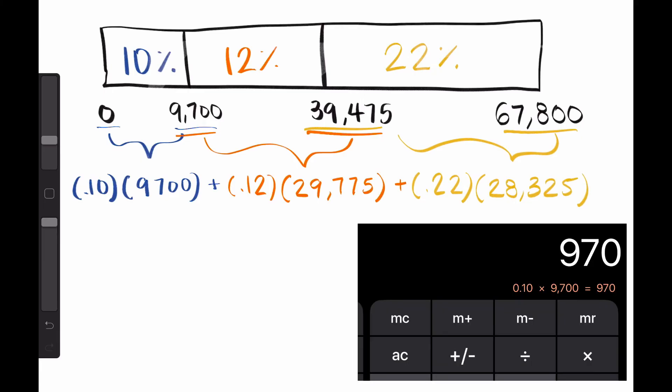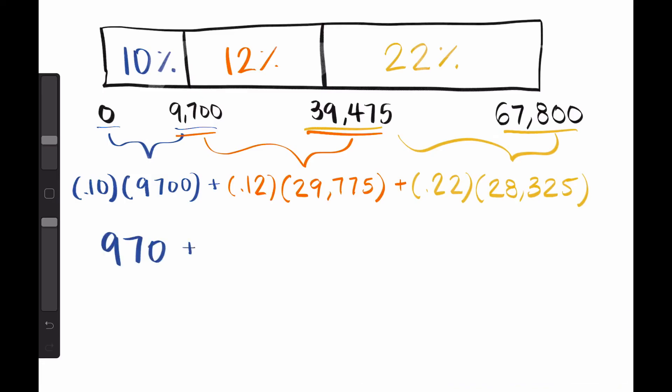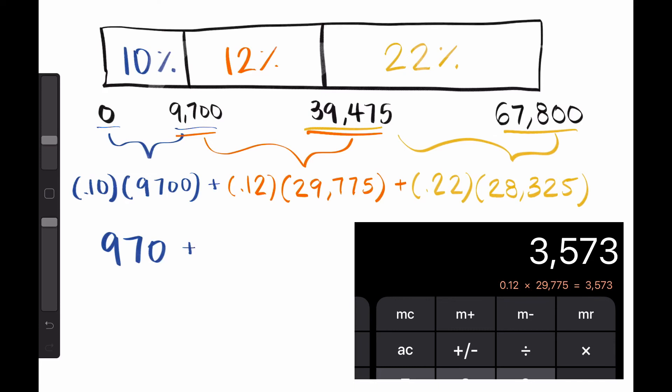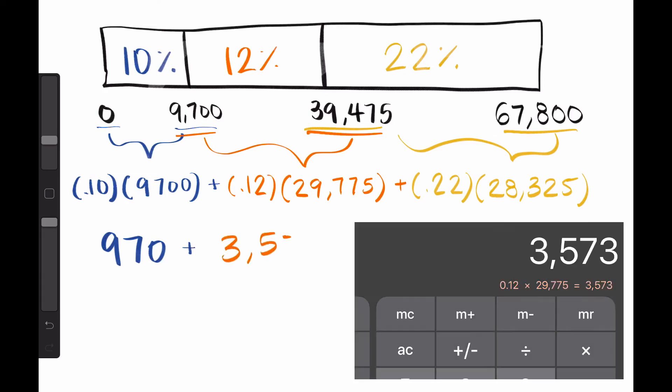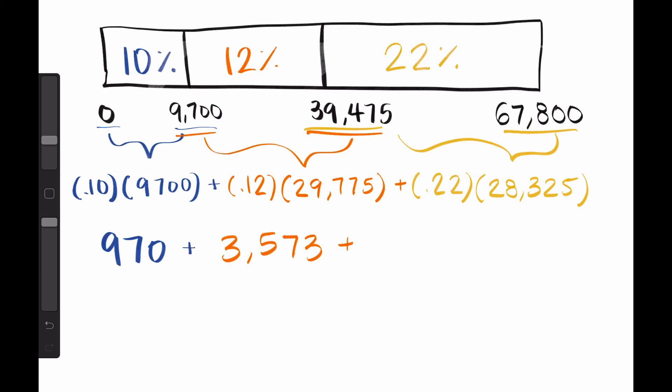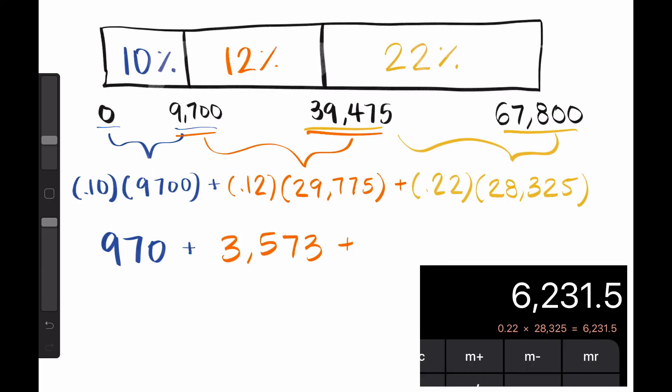Using the calculator, we can see that .10 times 9,700 equals 970, .12 times 29,775 equals 3,573, and .22 times 28,325 equals $6,231.50.